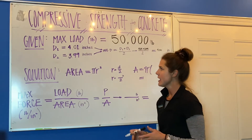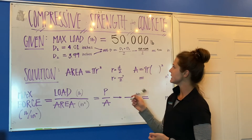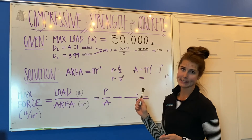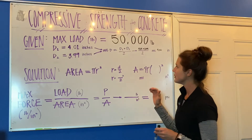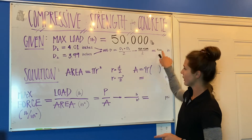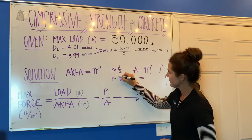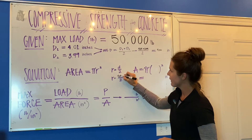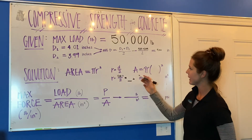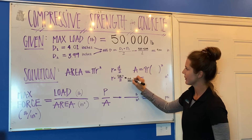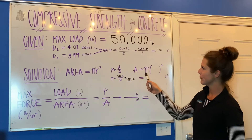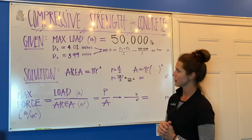For our area equation we're going to need the radius. To find the radius from the diameter, all we do is divide it in half — so we take 4.00 divided by two, which gives us a radius of 2.00 inches.